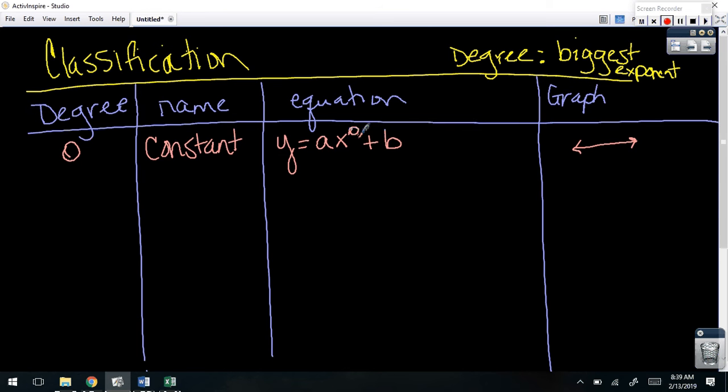Because A times X to the zero is just A times one, so you just have A plus B, which is just a number. So Y equals five, there's no real... For example, Y equals two or whatever. That would be a constant equation. Still a polynomial because it has one or more terms.